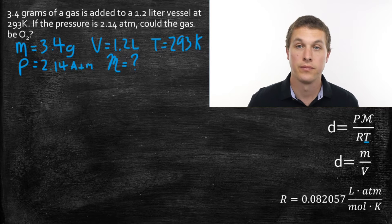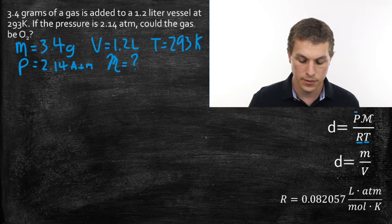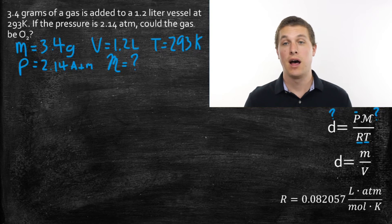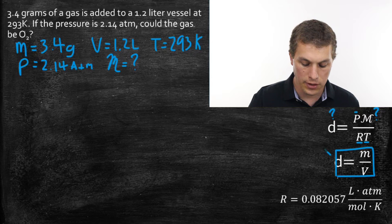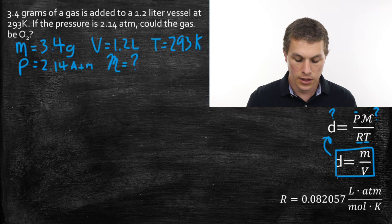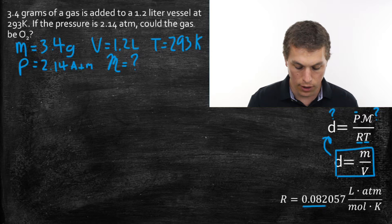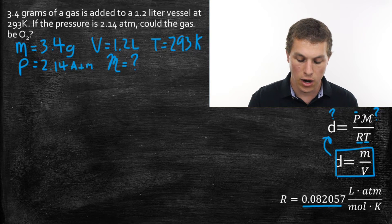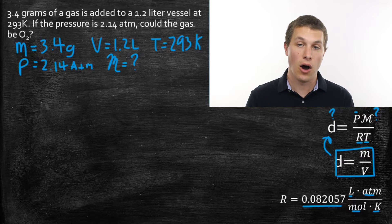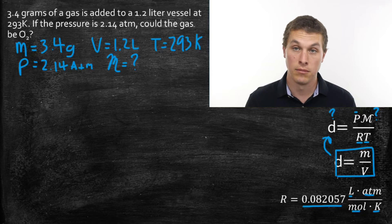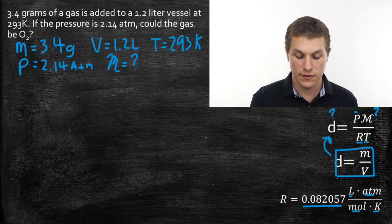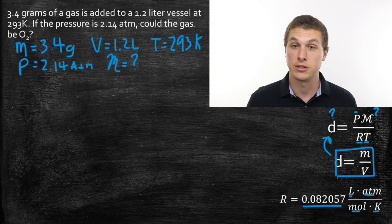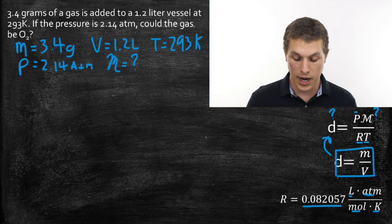Looking at our density equation, we have temperature, gas constant, and pressure, but we don't yet have density or molar mass. It's common in these problems to first use the density equation to solve for density, then plug that into the ideal gas law equation. We'll be using R = 0.082057 L·atm/mol·K, which means all units must be in liters, ATM, moles, and Kelvin. Our given values — liters, ATM, Kelvin — already match, so we're good on unit conversions.